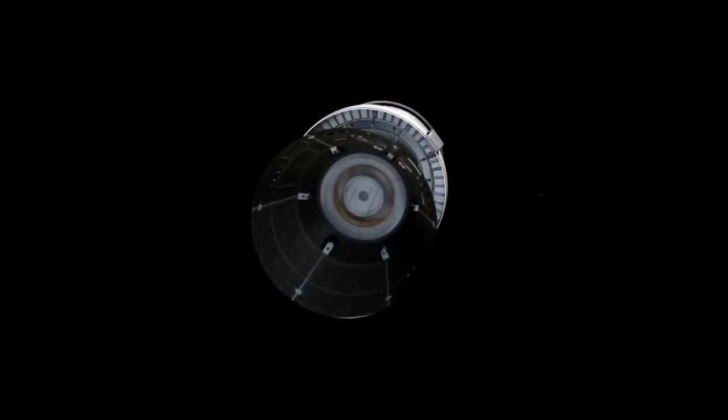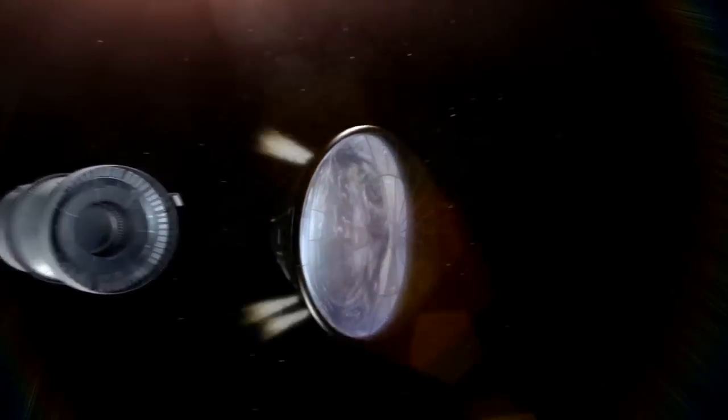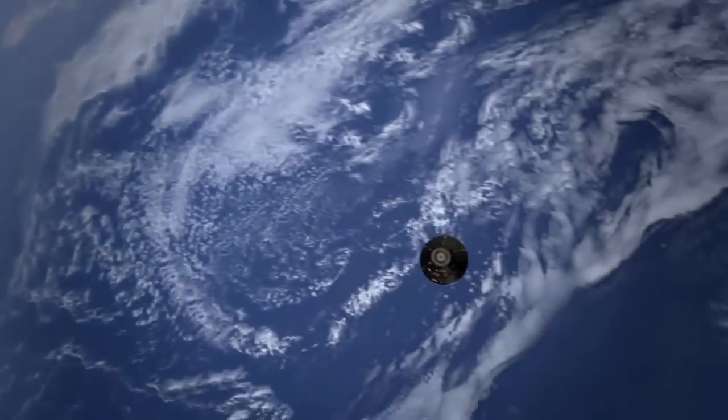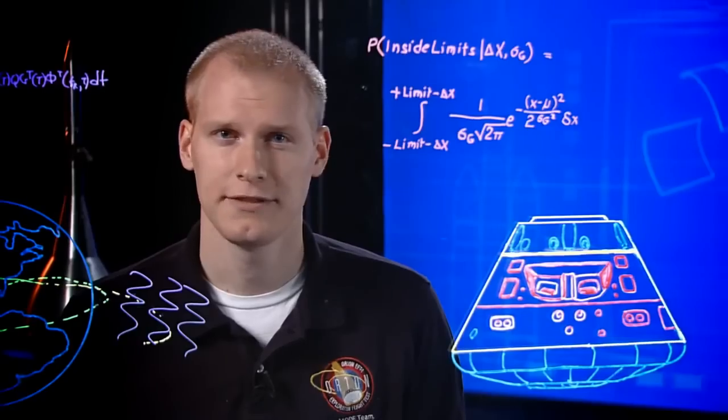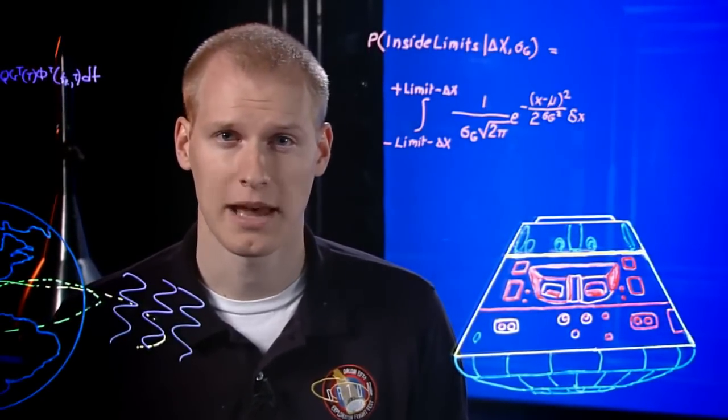The upper stage of the rocket triggers separation. Orion's jets fire to turn it into the proper position to re-enter Earth's atmosphere. No matter what happens now, we're coming in. 75 miles above Earth, the spacecraft enters the atmosphere. Things happen quickly.